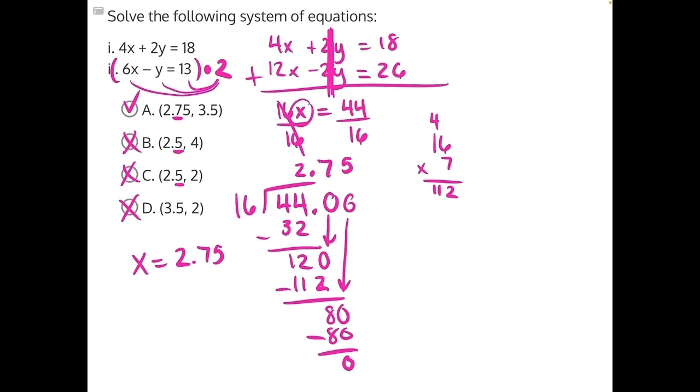Then we need to go plug that in to solve for y. I would recommend plugging it into this first equation here. We have 4x, so 4 times 2.75 plus 2y is equal to 18. For this multiplication, 4 times 2.75, I would recommend doing it in standard form. So we will have 2.75 times 4.